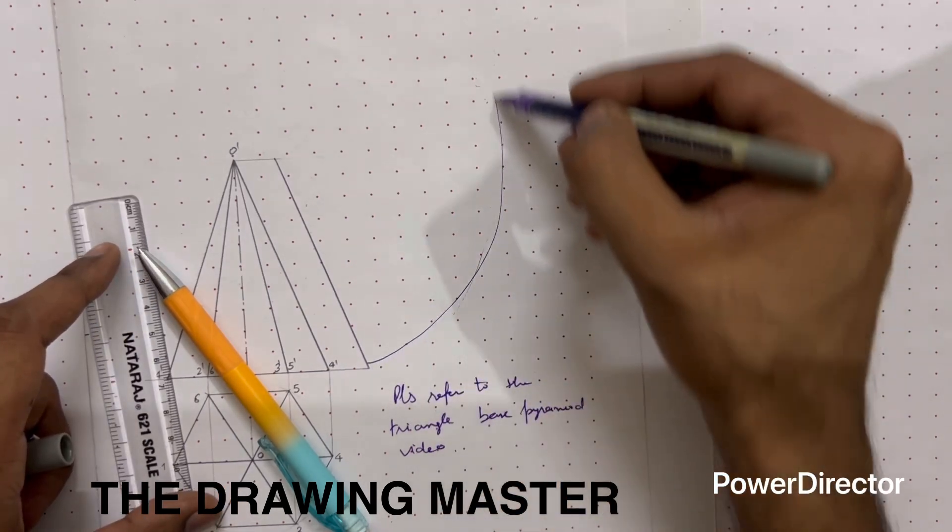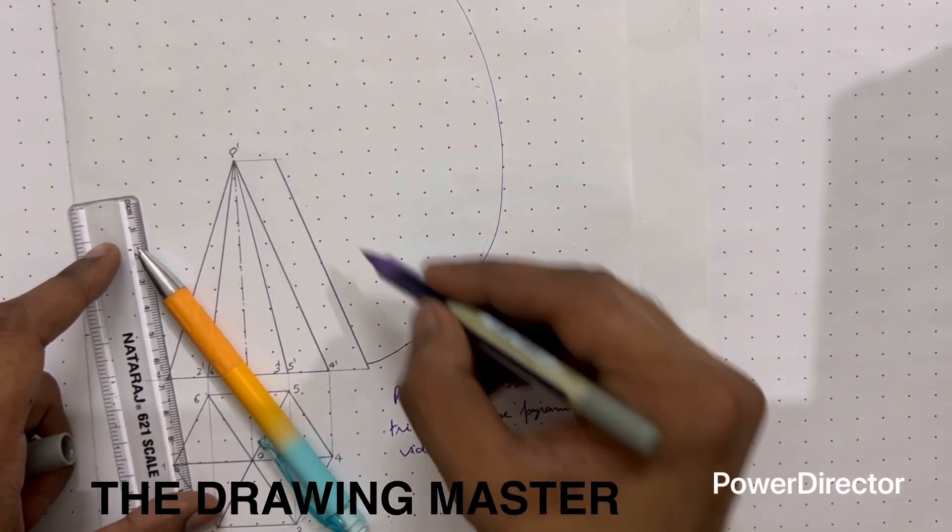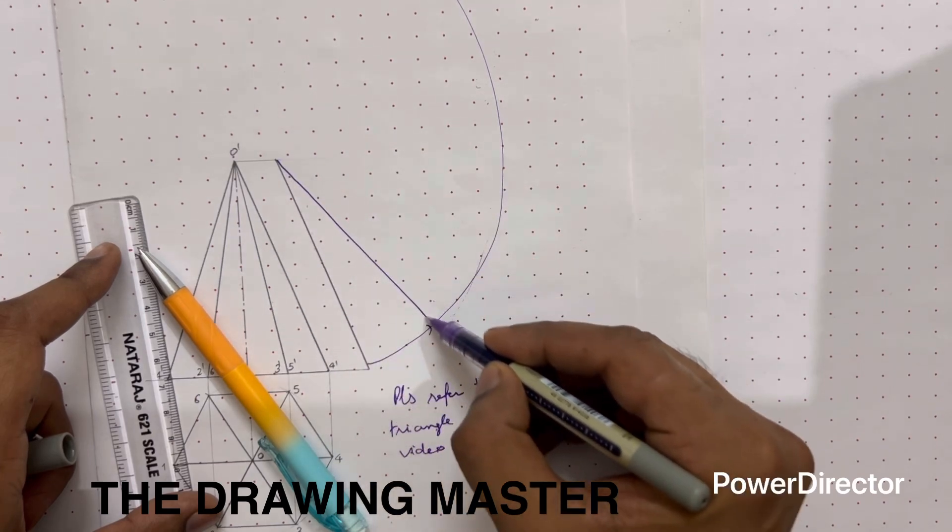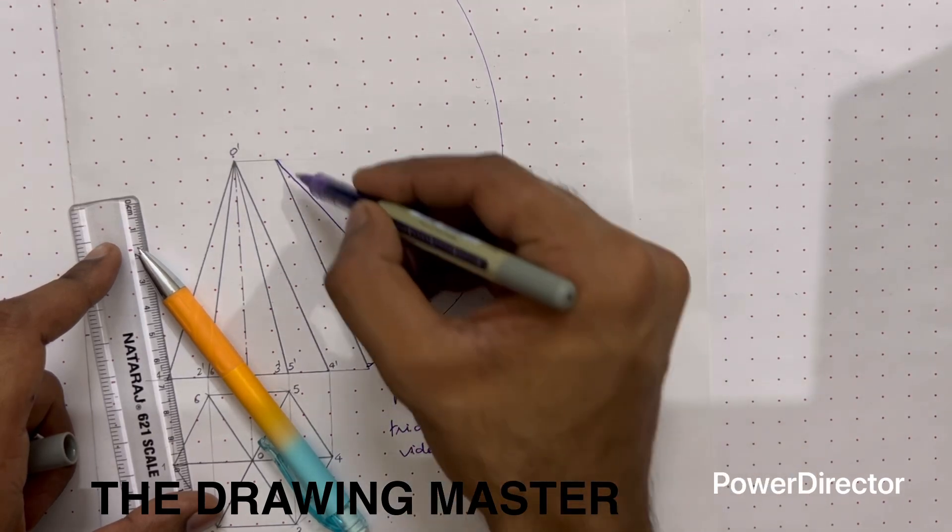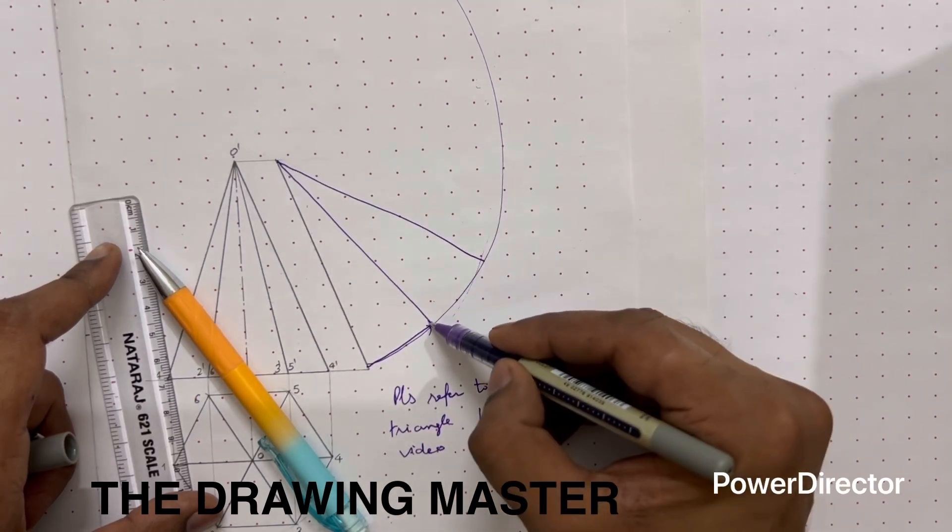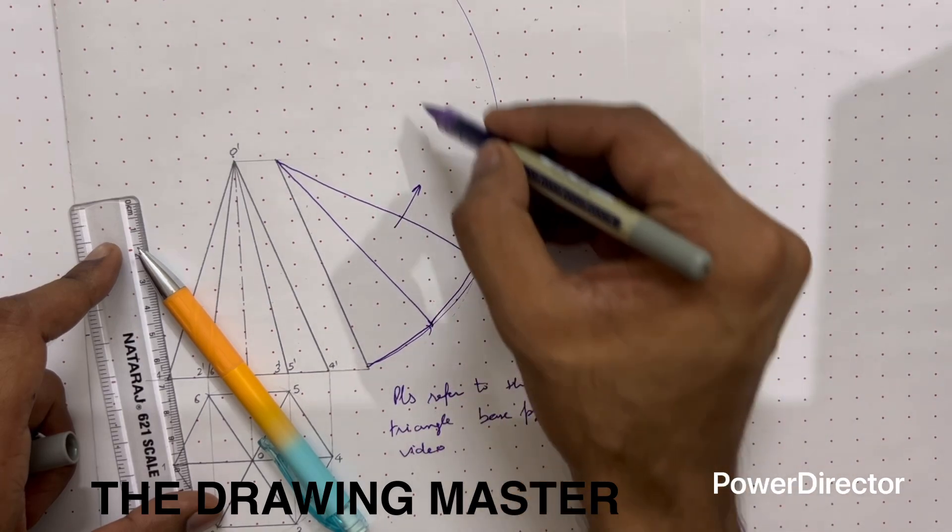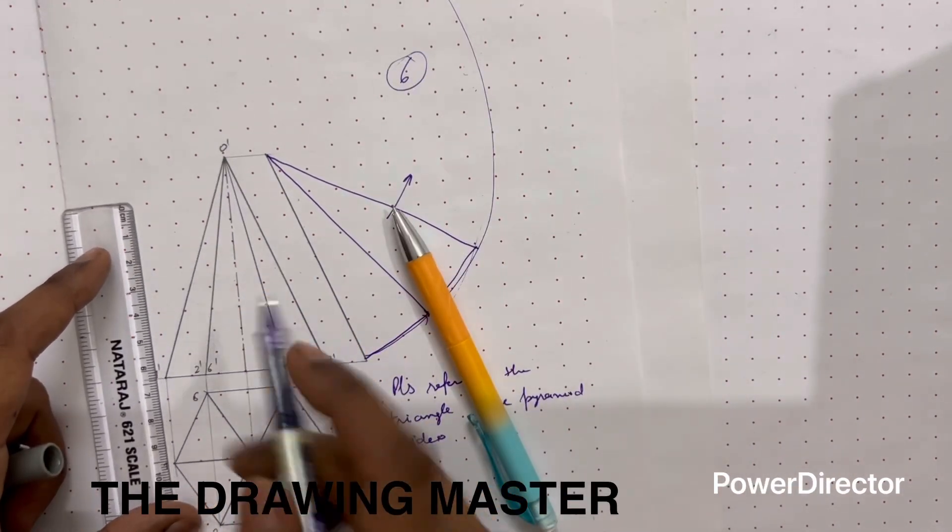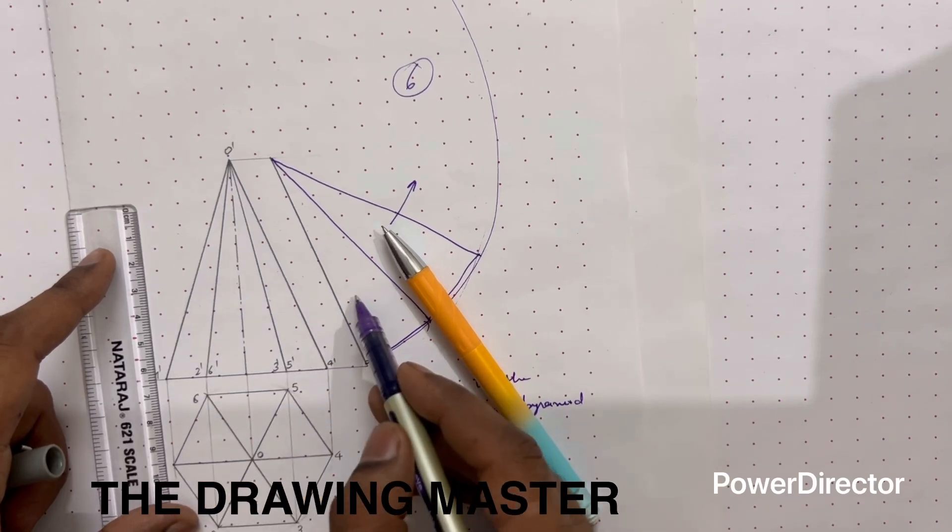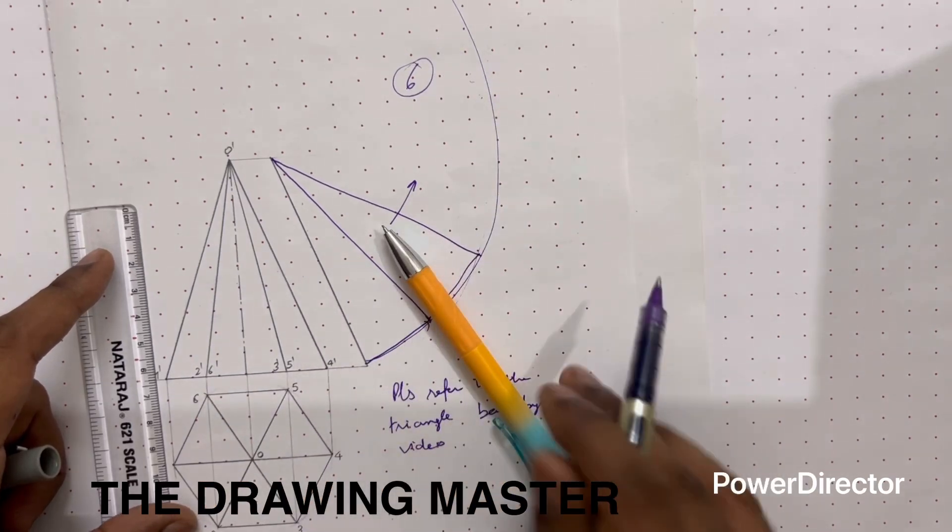For example, here we will take the arc - here 30mm. This is slant height, base edge, second triangle slant height, base edge. Similarly, up to six triangles. After adding the cutting plane, collect the points here and distribute the points with the help of compass.